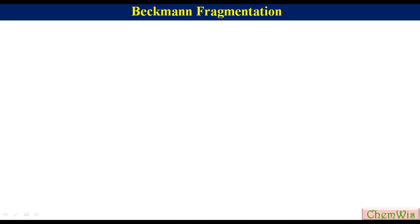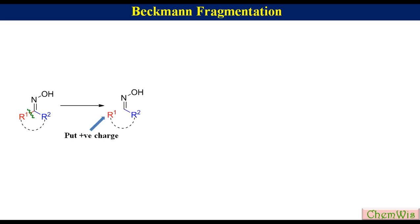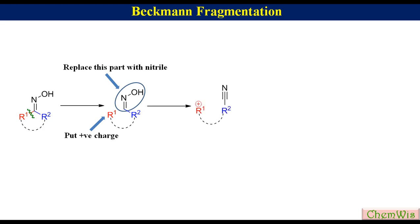You can draw the Beckman Fragmentation product without going into the detailed mechanism. For this, break the C-C bond trans to the hydroxyl group to get this structure. Put a positive charge on R1 and replace this part with nitrile to get this structure. Then, depending upon the reaction conditions, eliminate a proton to get R1 converted to an alkene, or add a nucleophile to get the substituted product.